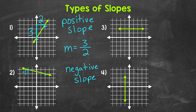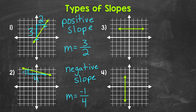Now for the run, we go over one unit, two units, three units, four units to get to the other point. So our run is positive four since we went to the right. Our slope equals our rise of negative one over our run of four, so our slope is negative one fourth. That's our second type of slope: negative slope. Positive slope moves upward from left to right, and negative slope moves downward.